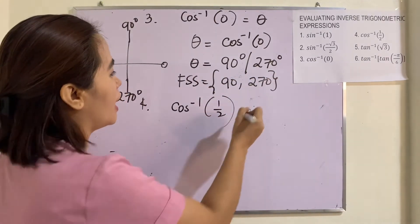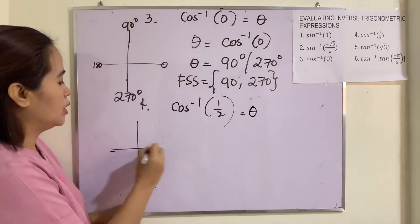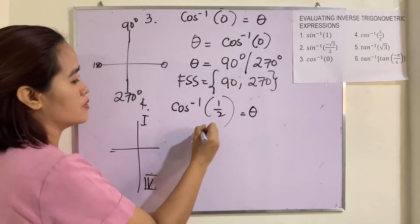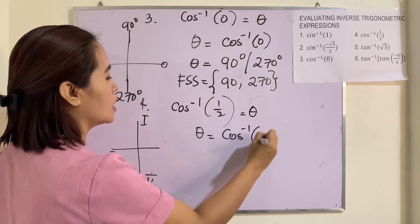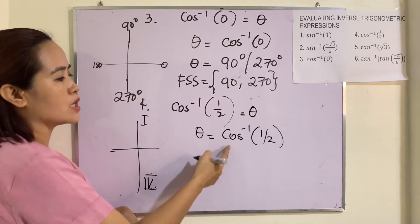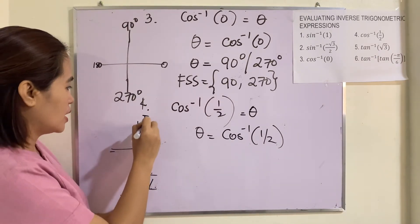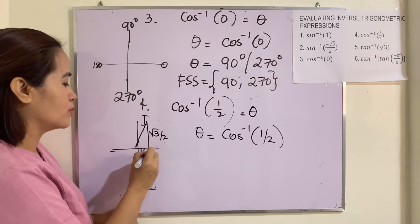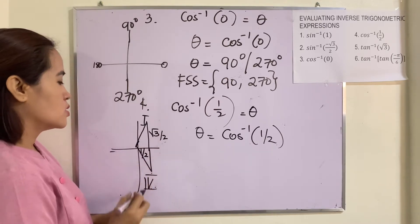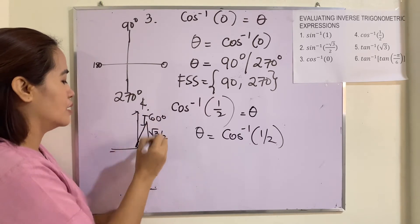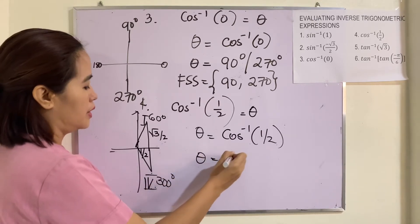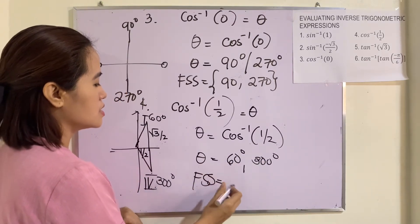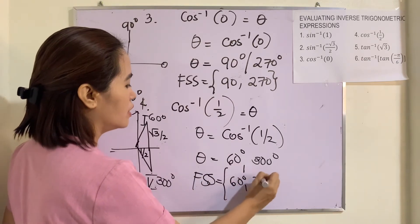Example 4: arc cosine of 1/2. We will be locating this — in what quadrant? It can be in quadrant 1 or quadrant 4 because cosine is positive there. We have to look for the value of the angle in which the cosine function is positive 1/2. Using the unit circle, this is 60 degrees and this is 300 degrees. Therefore, the FSS is 60 degrees, 300 degrees.